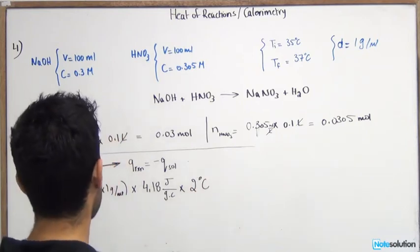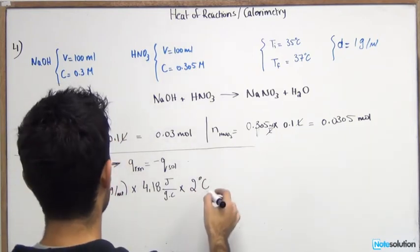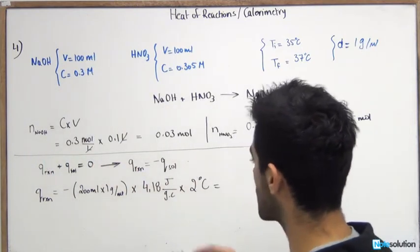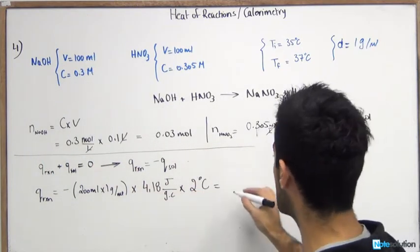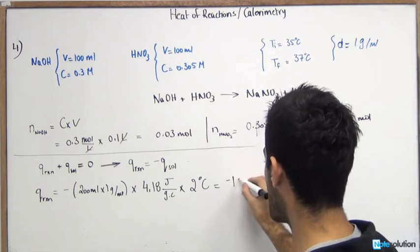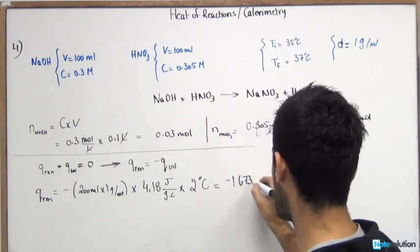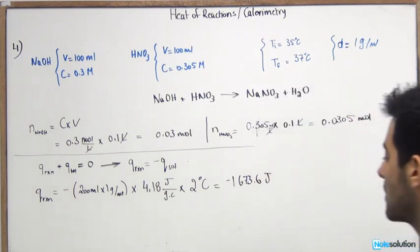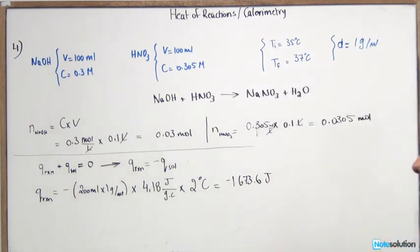So it's a two degree difference between them. So you can write it like this. So now we can go ahead and solve this question. If you do the multiplication and calculations you should end up with negative 1673.6 joules. So that's the answer for Q reaction.